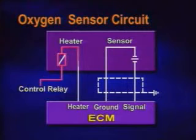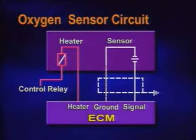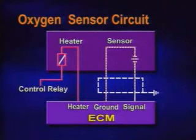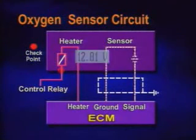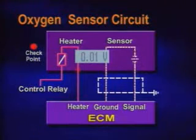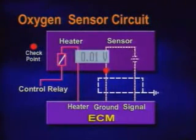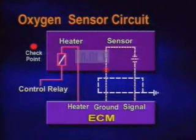The sensor has four terminals. Two of them are for the sensor heater and the others are for the sensor signals. The heater power is 12 volts from the control relay, and the other wire is controlled by the ECM.